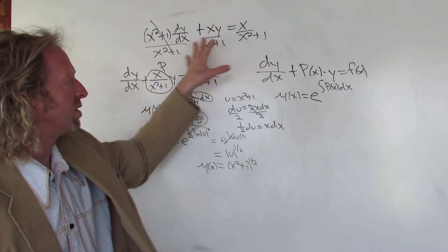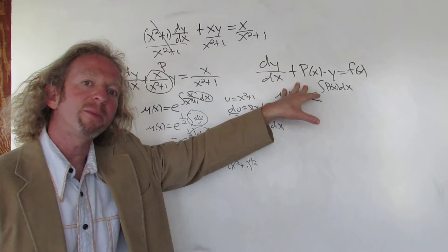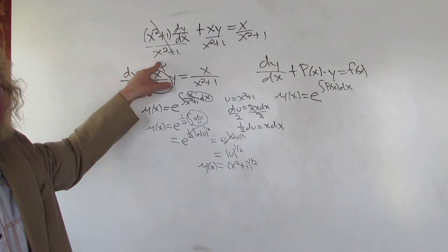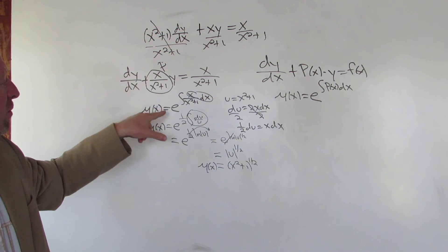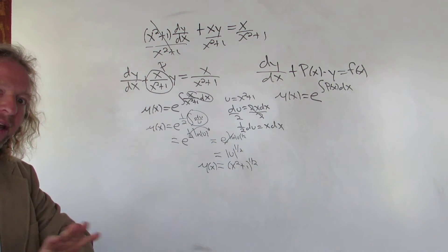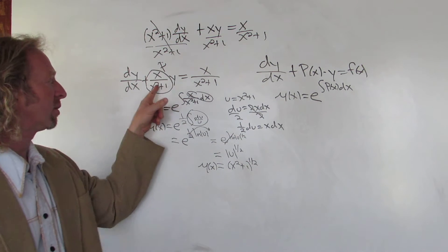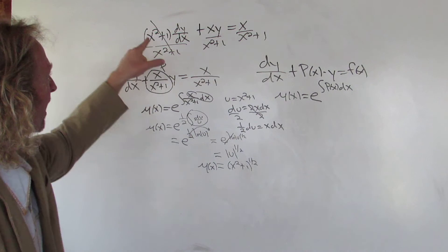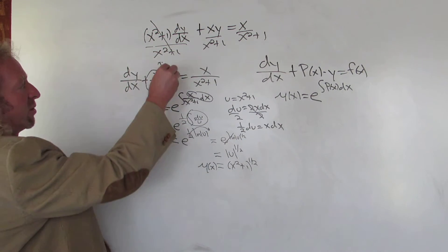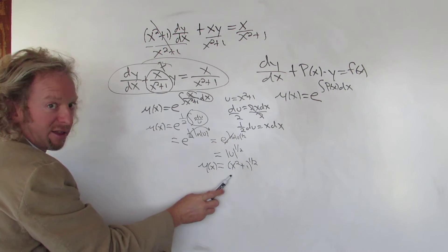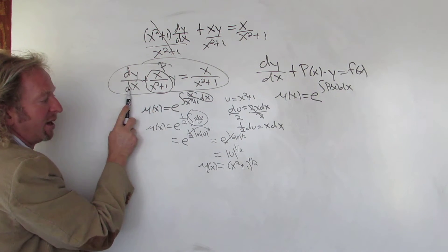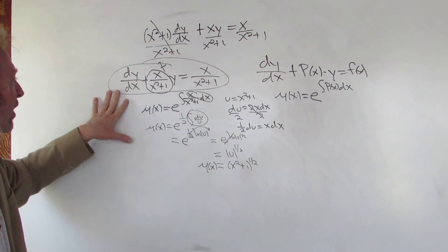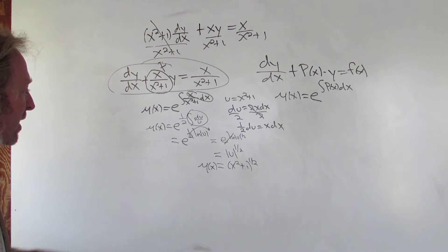So whenever you see a differential equation that can be written in standard form — if it's not already, you rewrite it, in this case dividing by x²+1 — you then compute μ(x), which is always e to the integral of P(x). Once you work that out, you multiply the equation in standard form by μ(x).